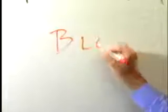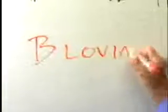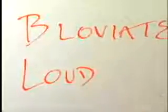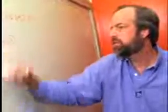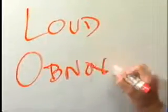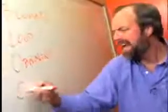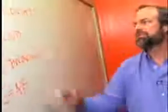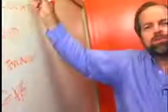What are those mistakes? They bloviate, they're loud, they get into fights, they're obnoxious, they call each other names, or they try to be too cute and they gab. That works in a personal blog, but in a professional blog you're trying to do something more important.